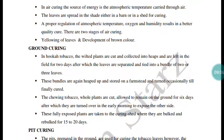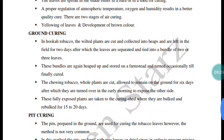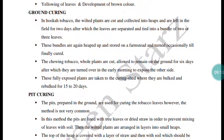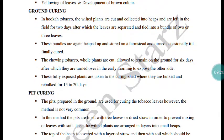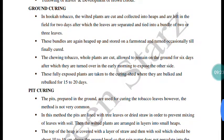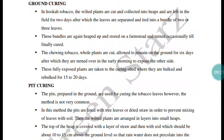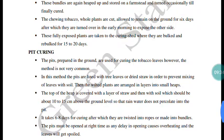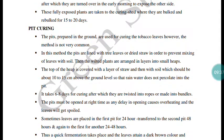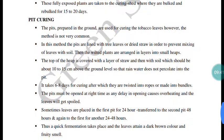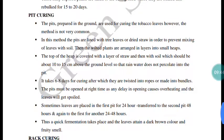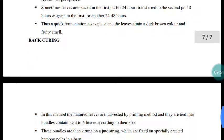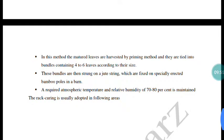In air curing, leaves are allowed to develop brown color. Leaves are cut, bundled, and laid on the ground for curing. For example, in cigar-type tobacco, after harvest leaves are laid in the field for one to two days, then for two to three days bundled, achieving the required curing standard. In flue/rack curing, leaves of 4-6 layers are hung in a curing barn for 6-8 days.